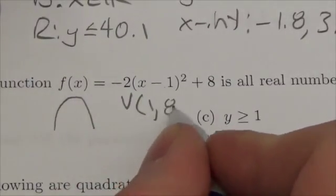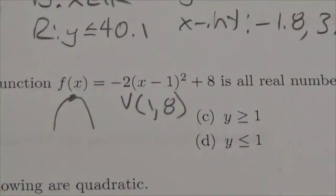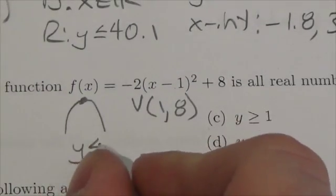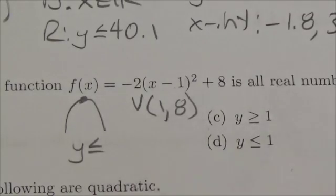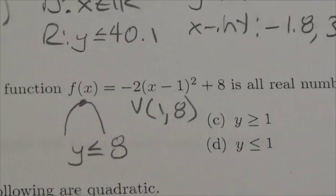...positive 1 comma 8—that's the point right here. The question is asking for the range, so we know that it's got to be y-coordinates. And because it opens down, y has got to be less than or equal to the maximum y-coordinate given by the vertex, and so that's 8.